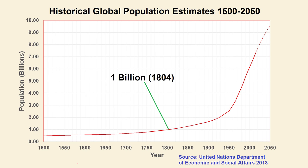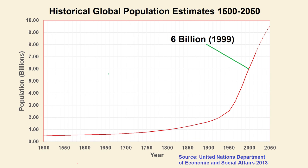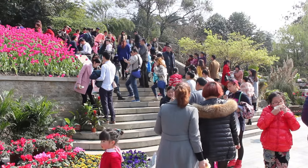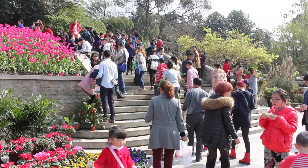By 1804, the world's population reached 1 billion. By 1959, the world's population was 3 billion. And by 1999, it had doubled to 6 billion. Today, there are over 7 billion people on the earth.